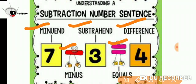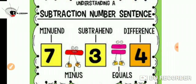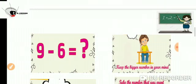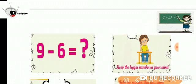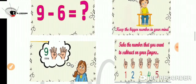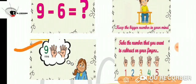So how will we read this equation? 7 minus 3 is equal to 4. Then we have here 9 minus 6 is equal to - we have to solve this equation. Very easy. Keep the bigger number in your mind. So we will keep the bigger number in our mind. Which is the bigger number? 9 is the bigger number.